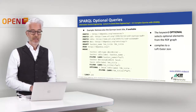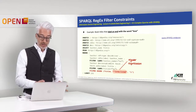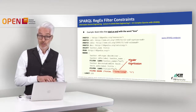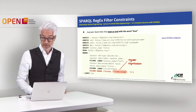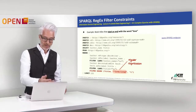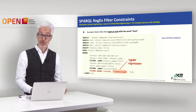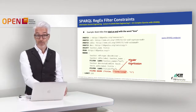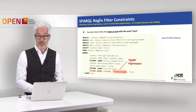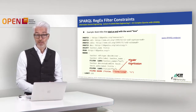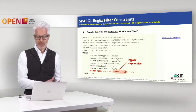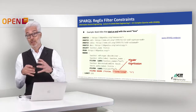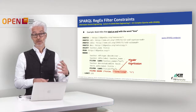Up to now, all graph patterns are combined conjunctively, meaning if one pattern does not exist, there will be no answer for that author. For example, if an author doesn't have a notable work or has no English title, they won't appear in the results. But sometimes it would be interesting to also include an author in your results even if a certain graph pattern, like having a title starting with 'love', is not fulfilled — making that constraint optional.